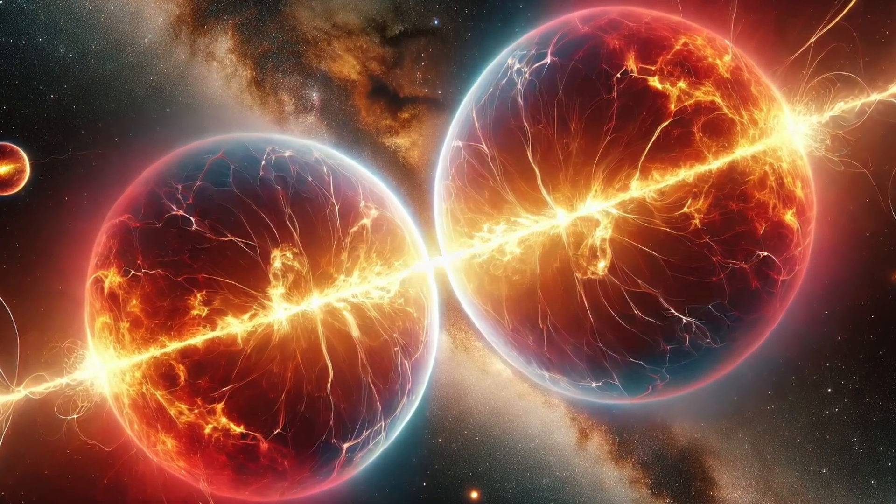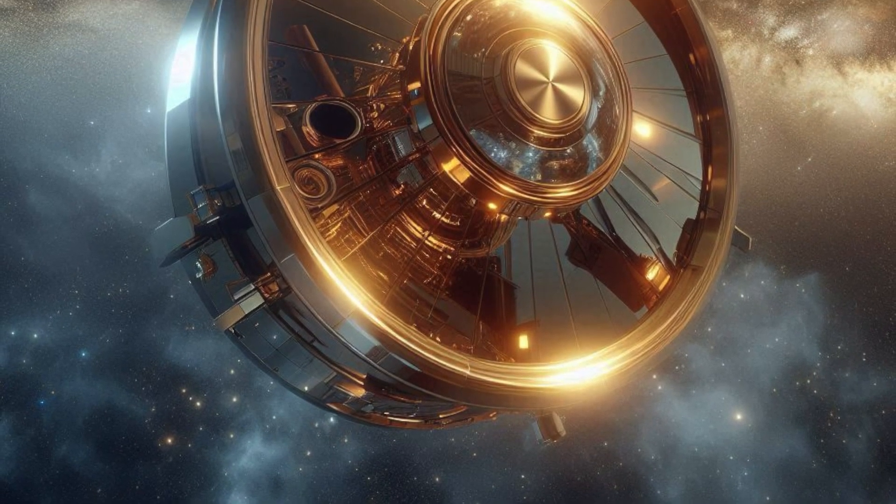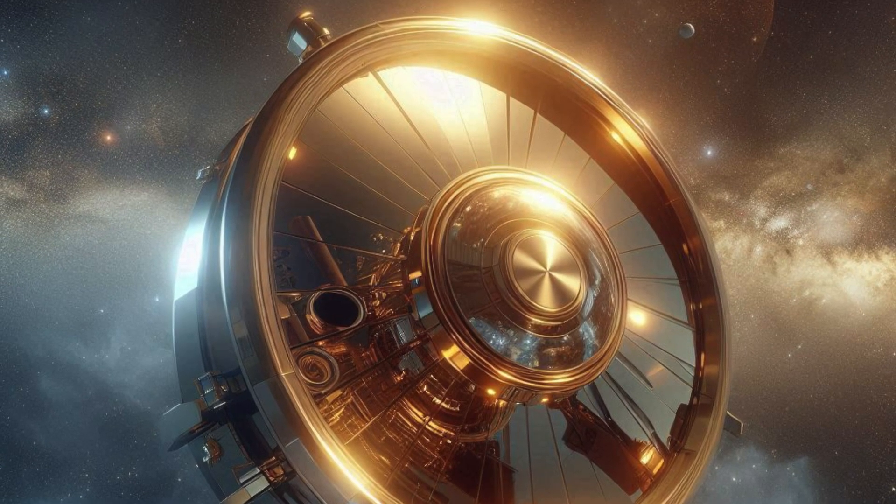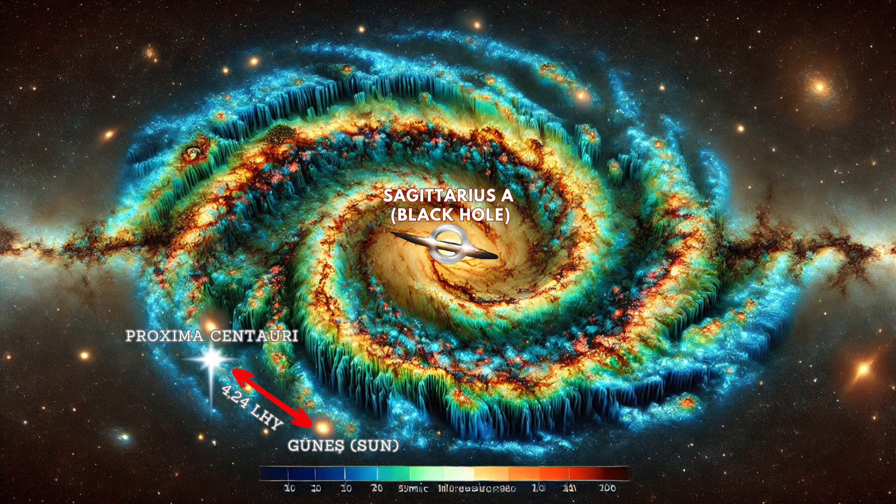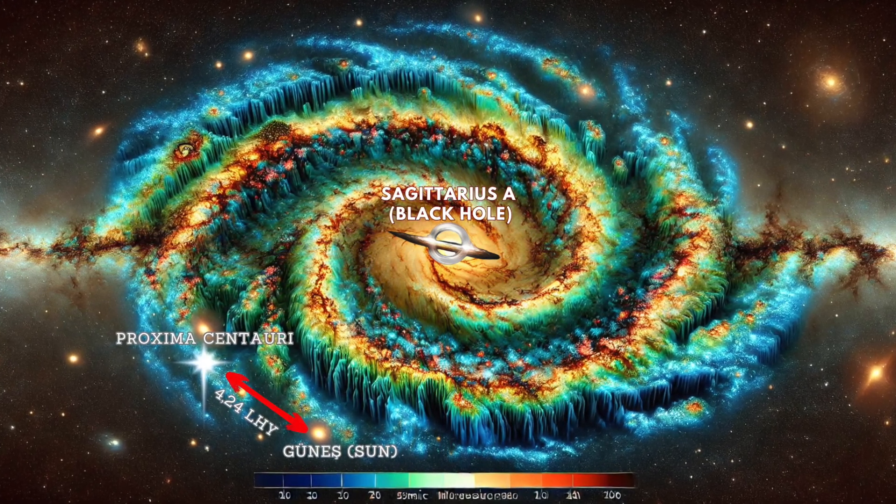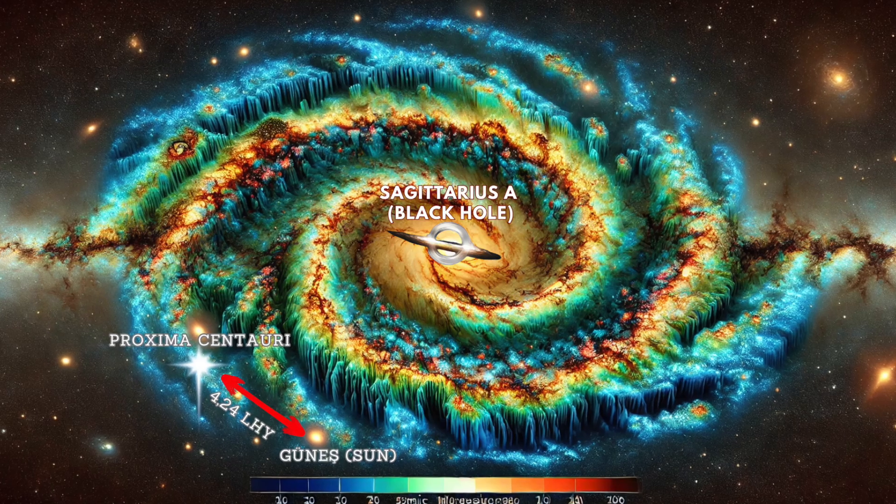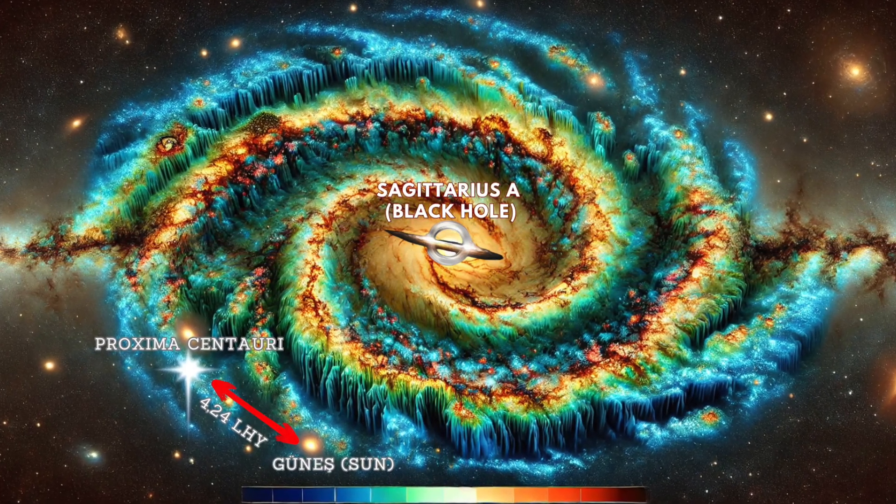Using the eROSITA telescope launched in 2019, scientists recently mapped our local hot bubble, revealing its unusual shape and varying temperatures across different regions. Interestingly, they also discovered a tunnel-like structure pointing in the direction of Proxima Centauri, the closest star to us at a distance of 4.24 light-years.